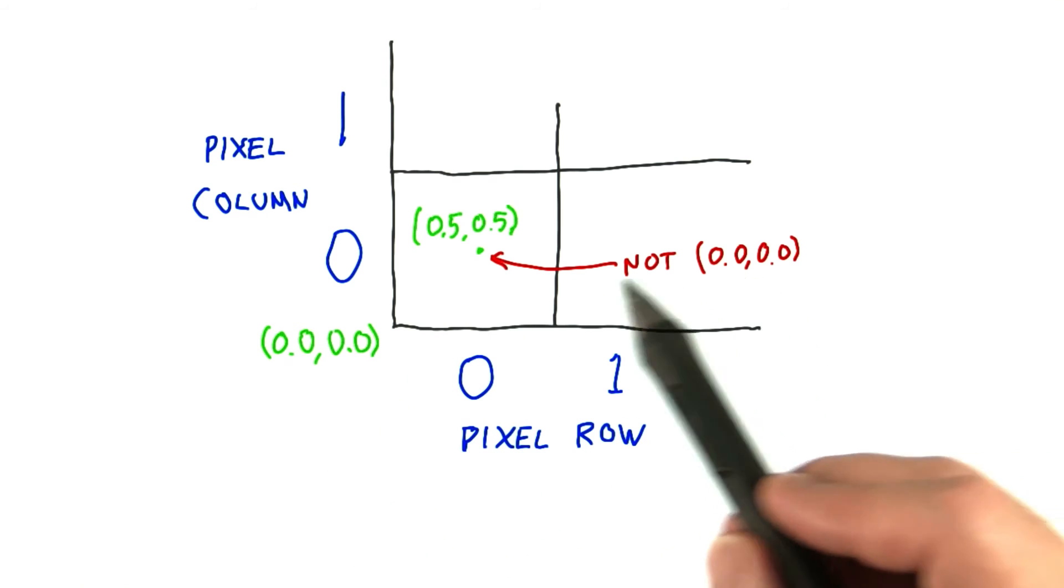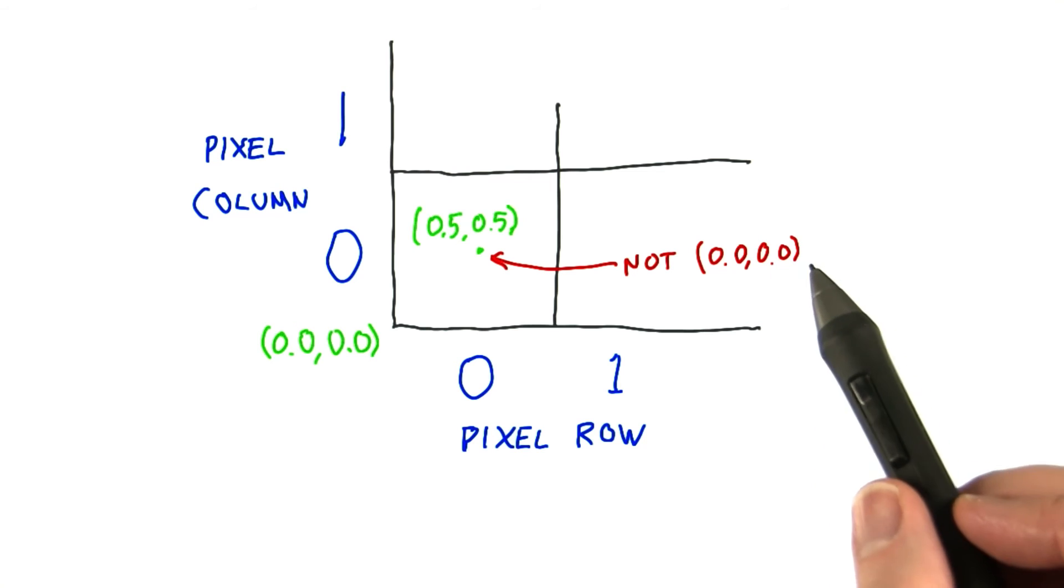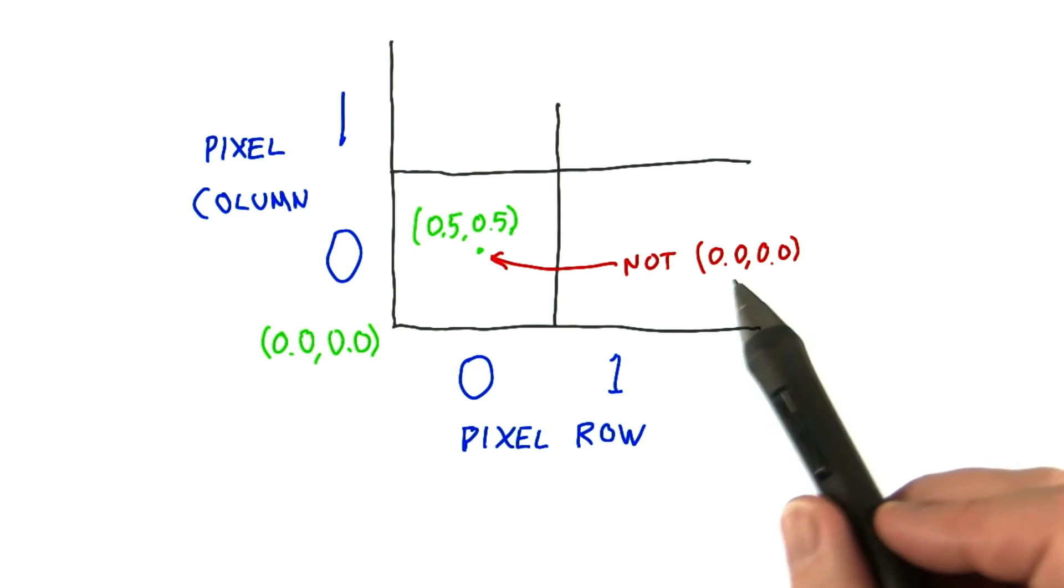DirectX9 got it wrong, making the center 0,0. They fixed this in DirectX10. I've seen textbooks talk about 0,0 as the center of the pixel. Don't believe them.